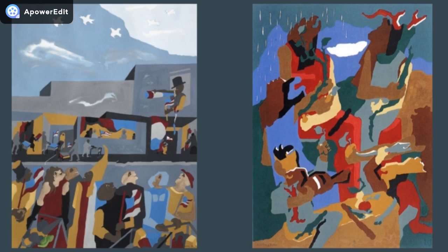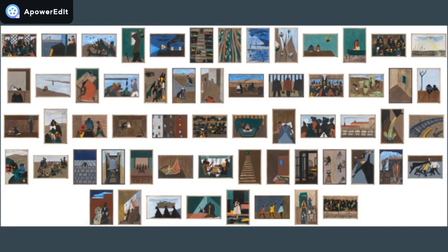Lawrence's art mostly used the colors black and brown for the figures in his paintings, but instilled the characters with universal longings and desires independent of skin tone. When he was only 23 years of age, Lawrence created his best-known series, The Migration Series, which was supported financially by the Rosenwald Foundation. In this series, he details the events leading southern Black communities to migrate north in search of better work, housing, and social climate.